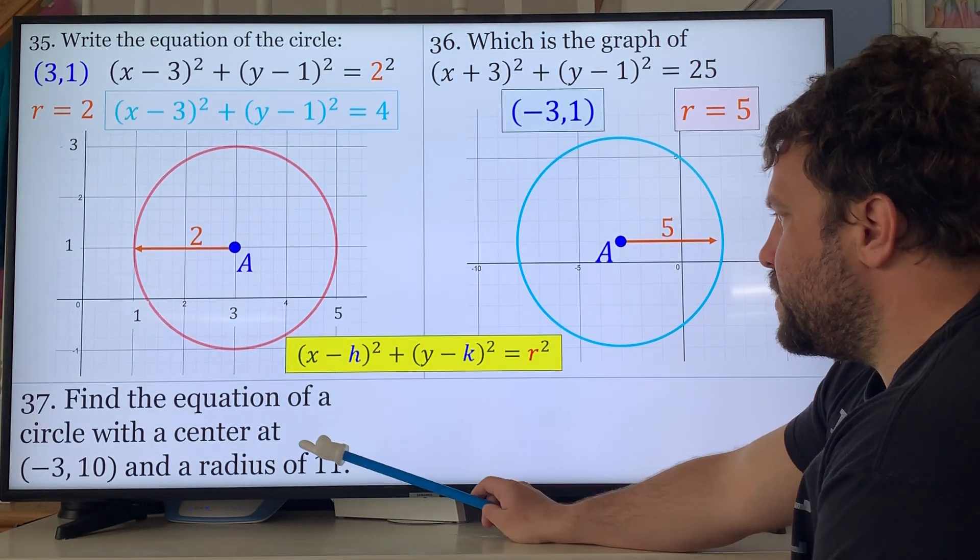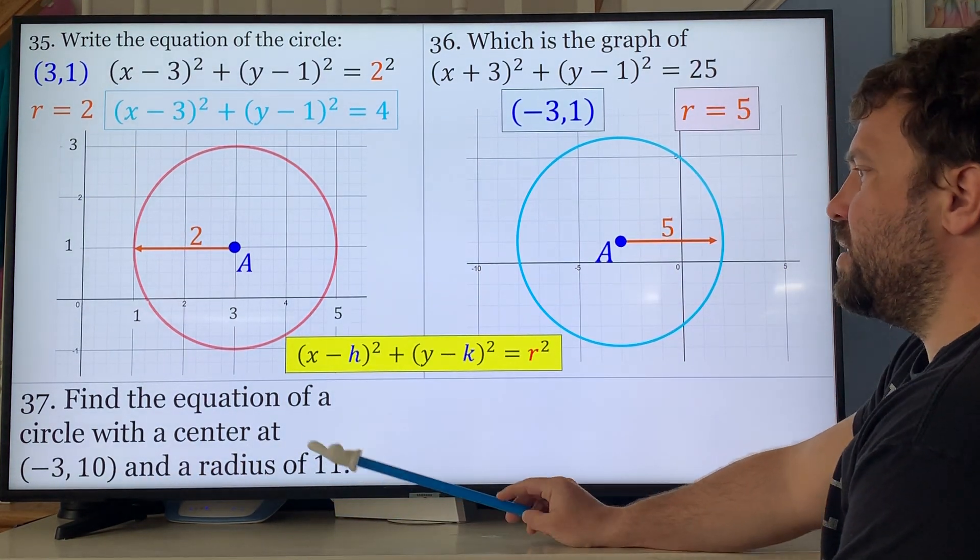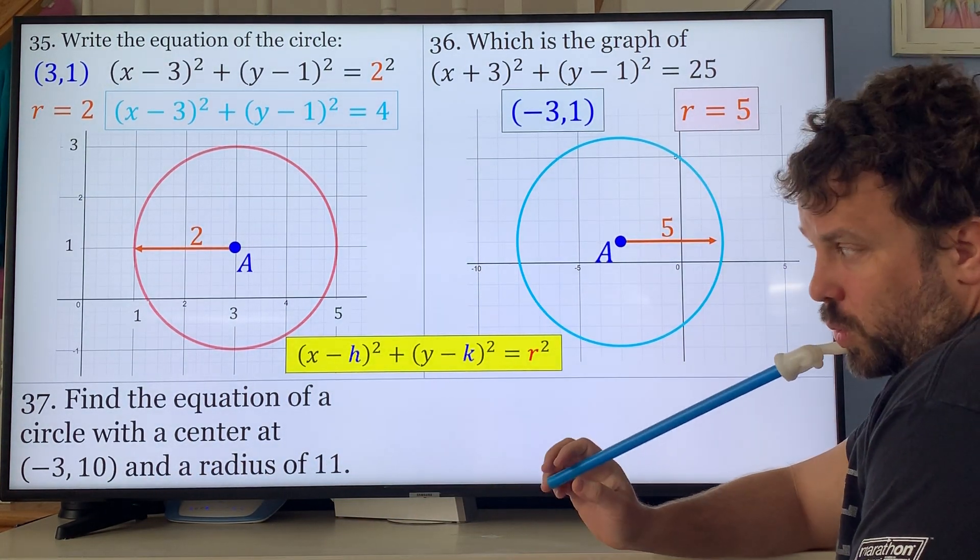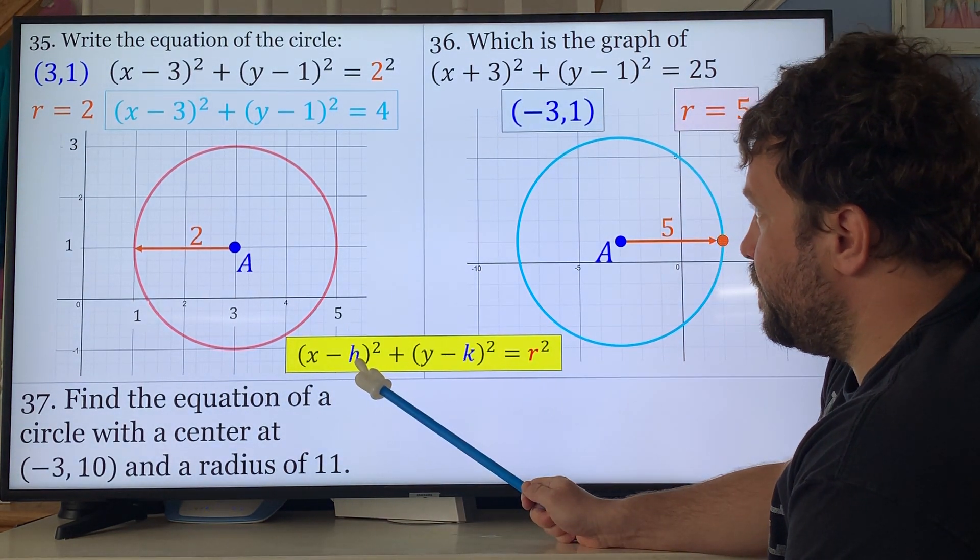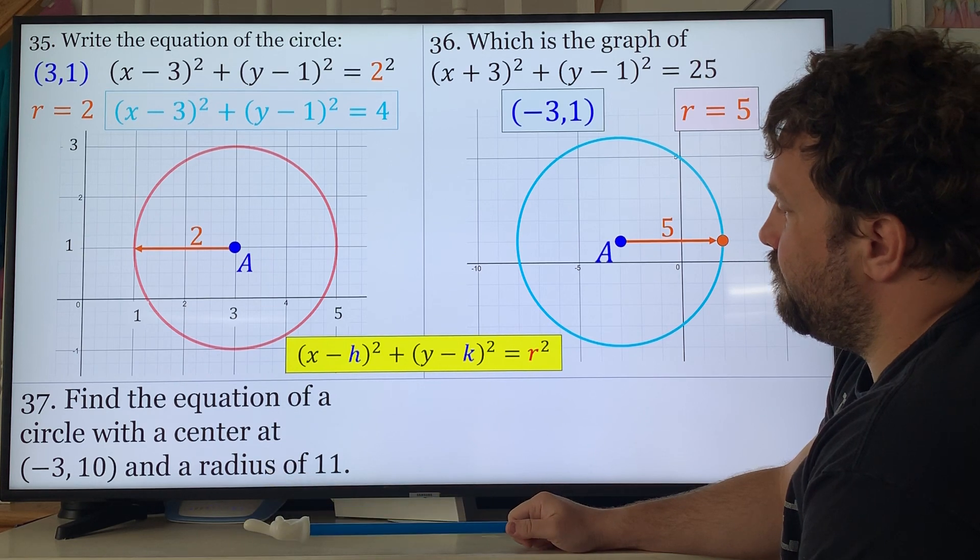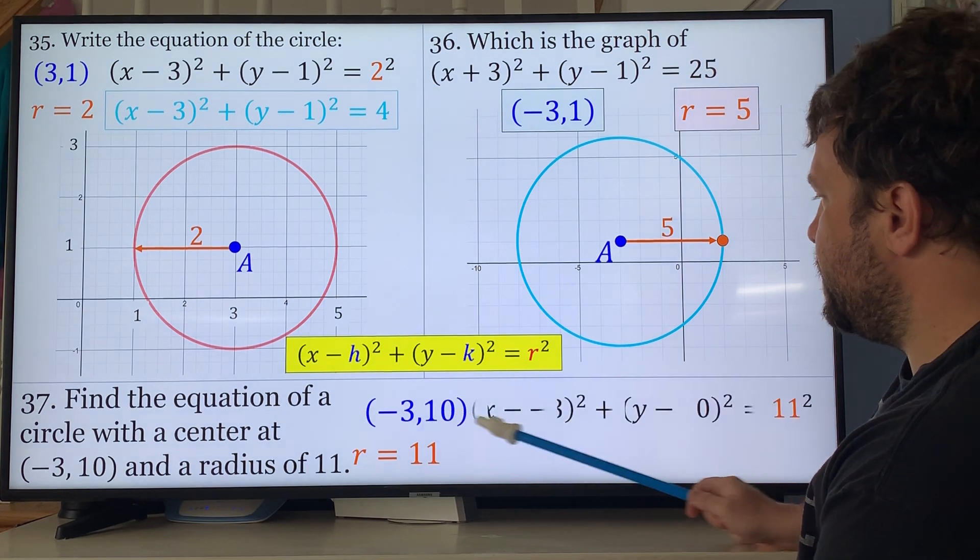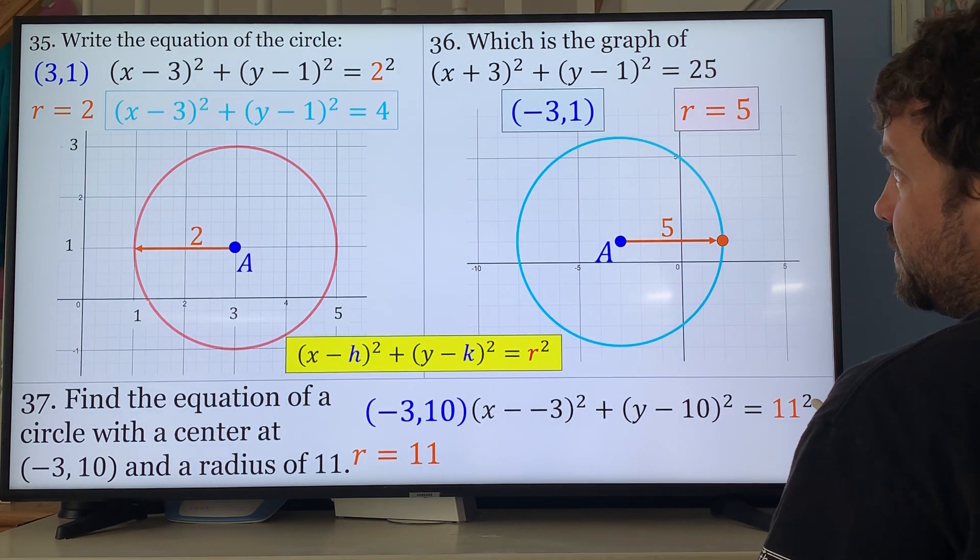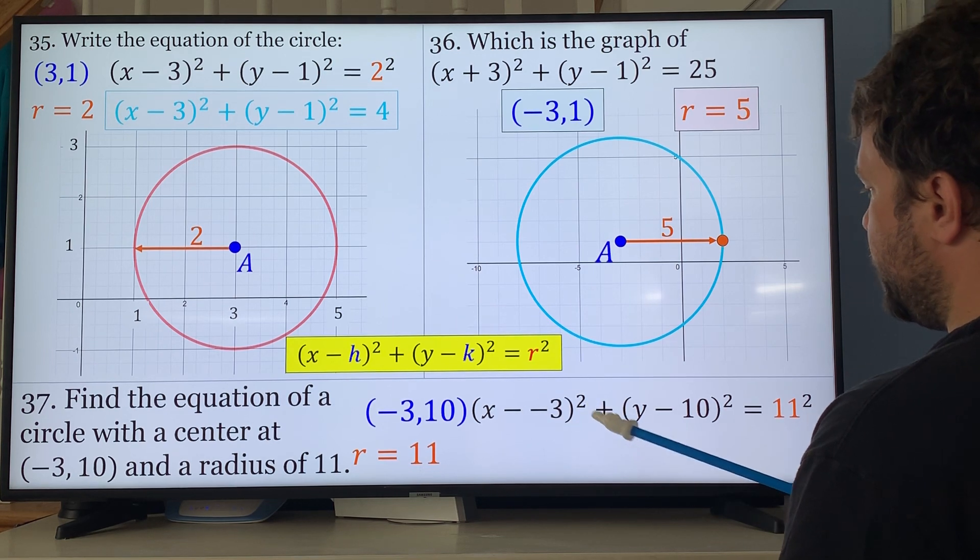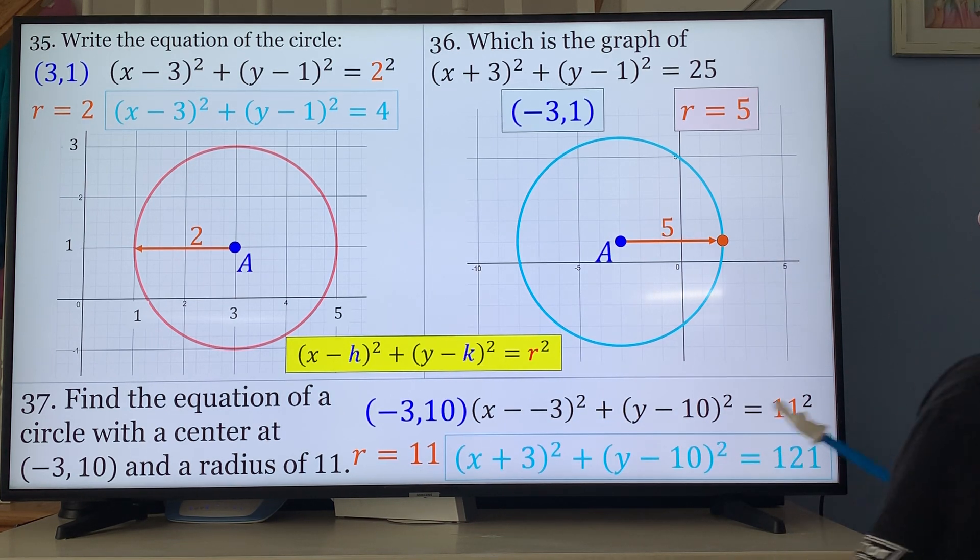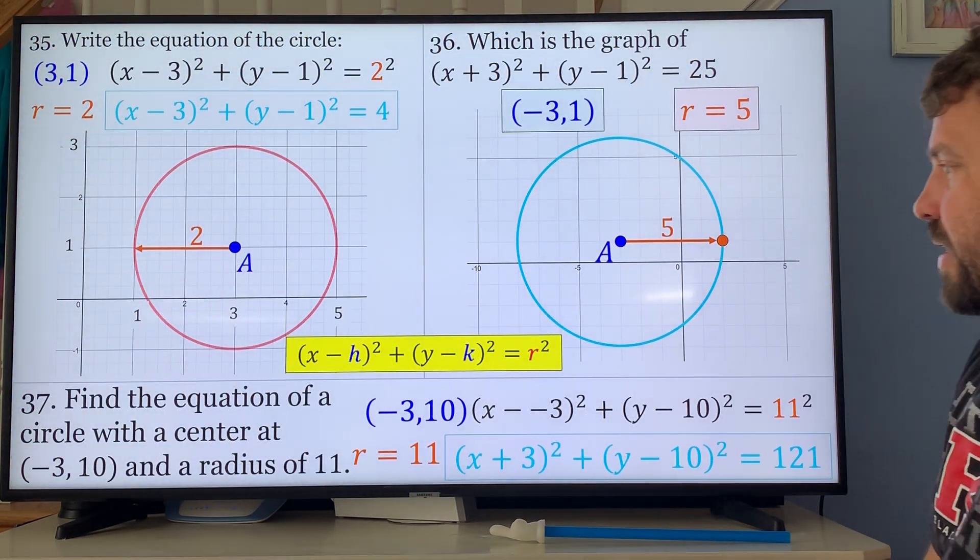Now you're going to have to graph the equation. This one said which graph, you had 4 to choose from. We'll just graph it here: (-3, 1), so 1, 2, 3, and then 1. Then your radius is the square root of 25 which is 5, so here and then you go to the right 5 for the point. Find the equation of a circle with the center at (-3, 10) and a radius of 11. So minus a negative 3, negative 3, 10, radius is 11. And then you got minus 10 equals 11 squared, right? (x + 3)² + (y - 10)² = 121. And that is that.